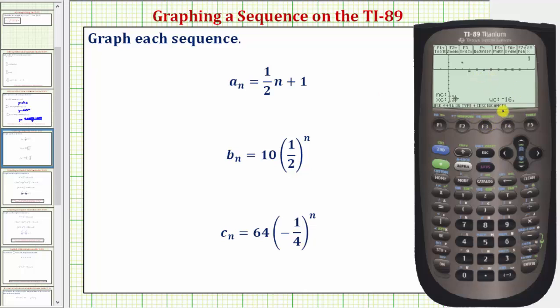We press trace, which is F3. We can view the first ten terms of the sequence by pressing the right arrow. Again, notice how the terms are approaching zero. They do alternate, but they also approach zero. I hope you found this helpful.